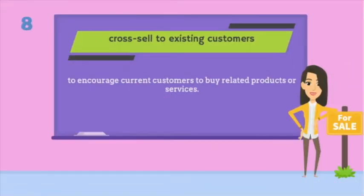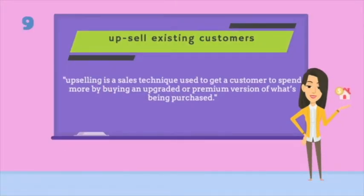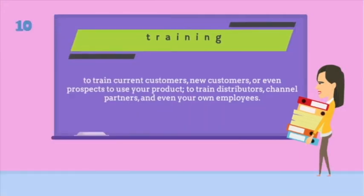Cross-selling is getting a customer to purchase products and services in addition to something they have already purchased or agreed to purchase. Whereas upselling is aimed at persuading customers to choose a more expensive, upgraded or premium version of the chosen item or other add-ons for the purpose of making a larger sale. Upselling is the practice of encouraging customers to buy a comparable higher-end product than the one in question, whilst cross-selling invites the customers to buy related or complementary items.